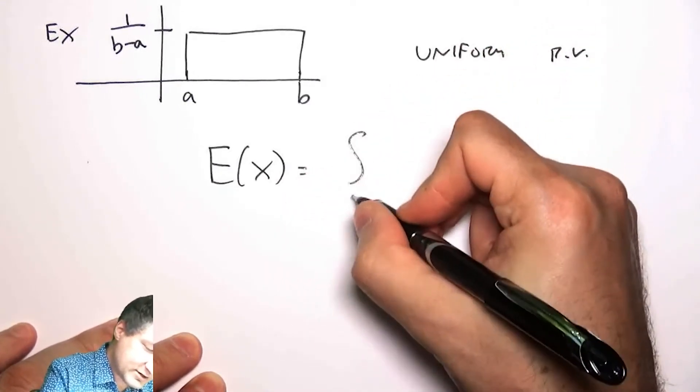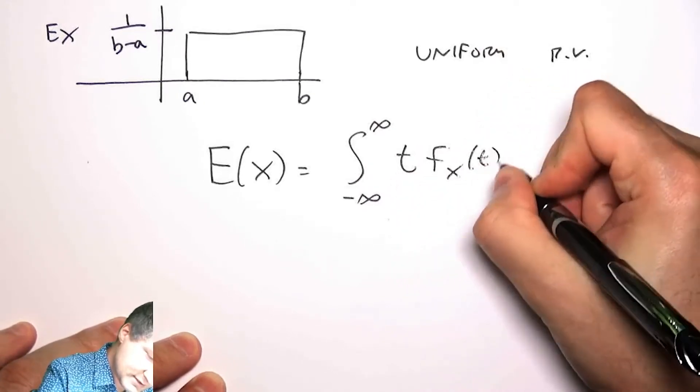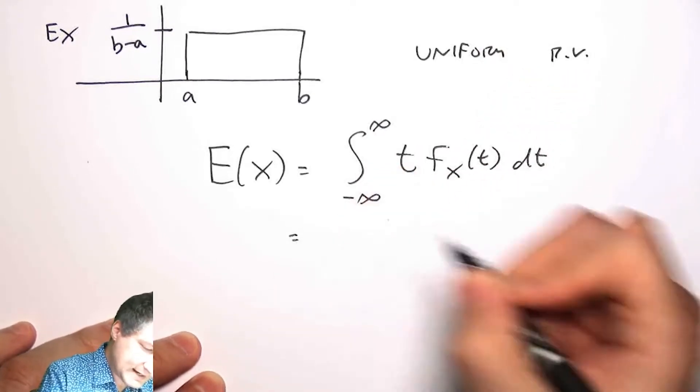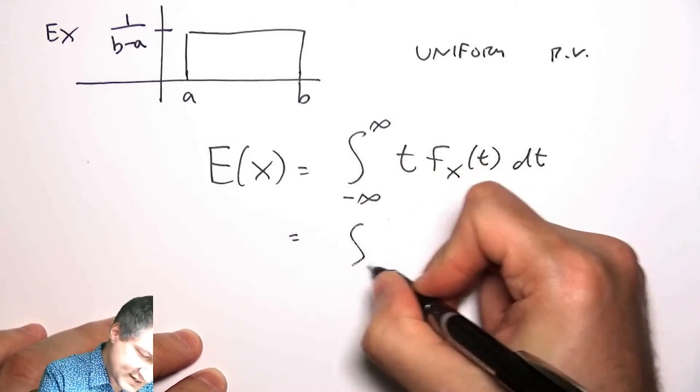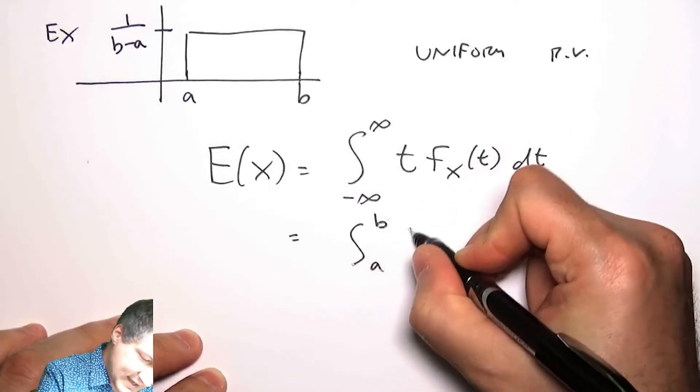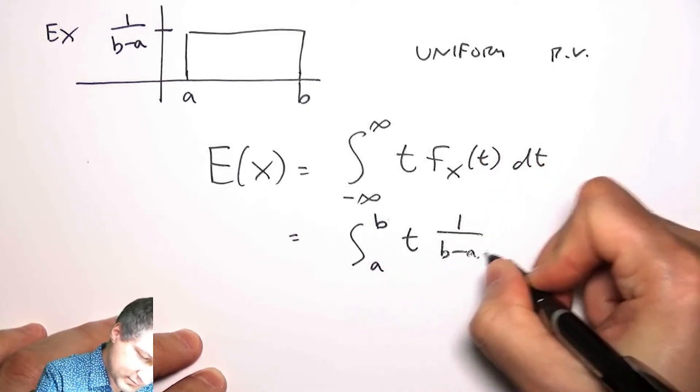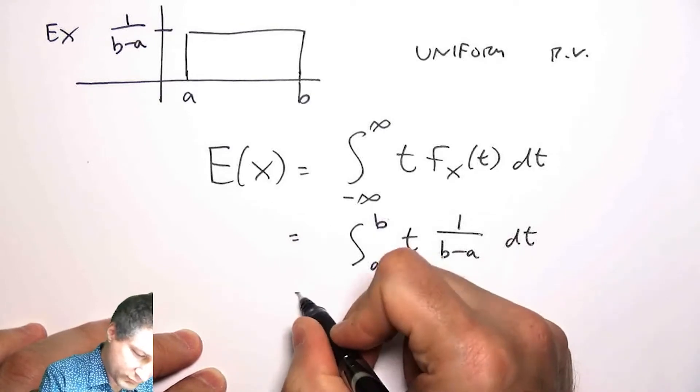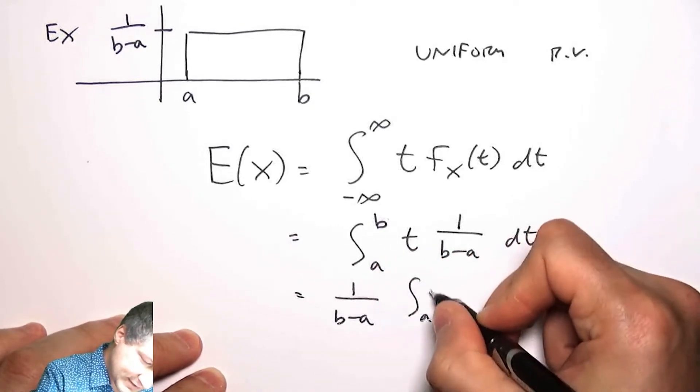Well, I integrate across the whole real line, t times the PDF. Now I can make some substitutions. So I know that the PDF is 0 outside of a and b, and the value inside a and b is 1 over b minus a, which is like a constant. And so I can take this out like so.